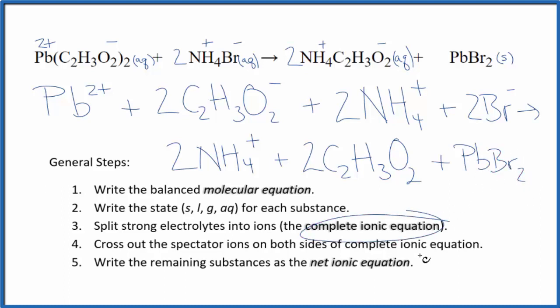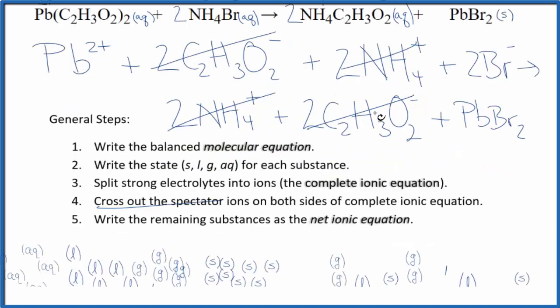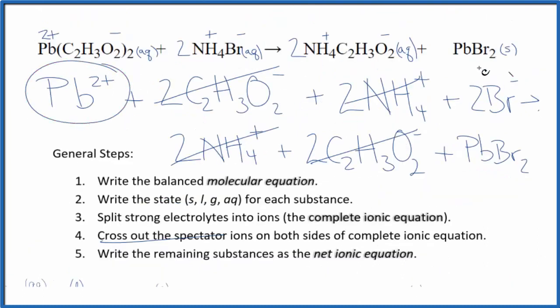So we have our complete ionic equation. Now we'll cross out the spectator ions - they're on both sides. I can see I have two acetate ions here in the reactants, two in the products - those are gone. I have two ammonium ions, two here - cross those out. And what's left - this is the net ionic equation for lead(II) acetate plus ammonium bromide.